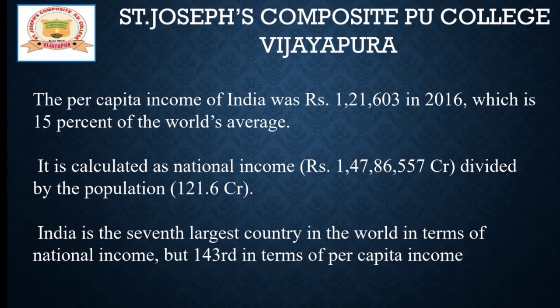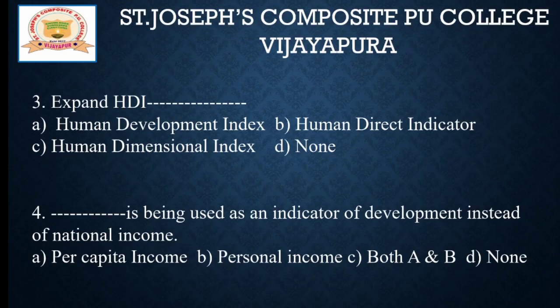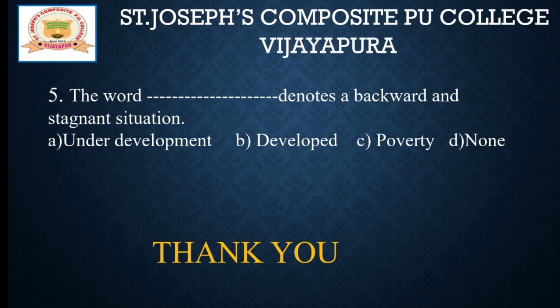In this episode, there are some MCQ questions for you to solve and practice for the examination. Question 1: The per capita income of India was ___ in 2016. Question 2: ___ is the 7th largest country in the world in terms of national income. Question 3: Expand HDI. Question 4: ___ is being used as an indicator of development instead of national income. Question 5: The word ___ denotes a backward and stagnant situation. Kindly attempt these questions. The remaining part will be discussed in the next episode. Thank you.